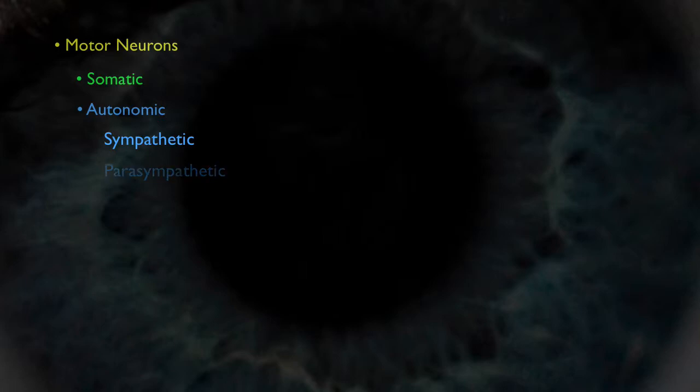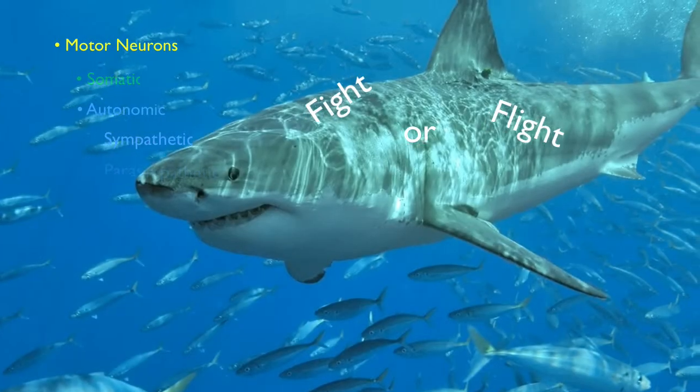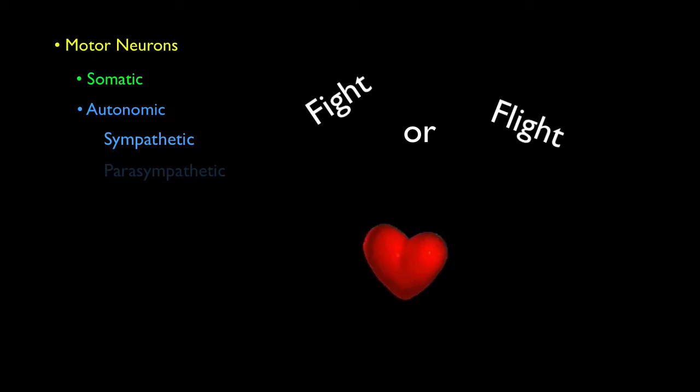The sympathetic nervous system is active during a fight-or-flight response, that is, when you're in danger. Shark! Sympathetic autonomic neurons are used to make your heart beat faster, make your lungs take in more oxygen, and turn down digestion, which isn't really important in an emergency.